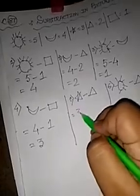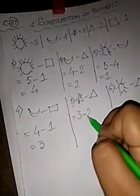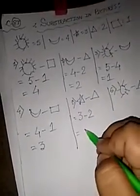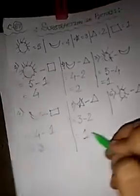Star, that is 3, minus triangle equals to 2, so 3 minus 2 equals to 1.